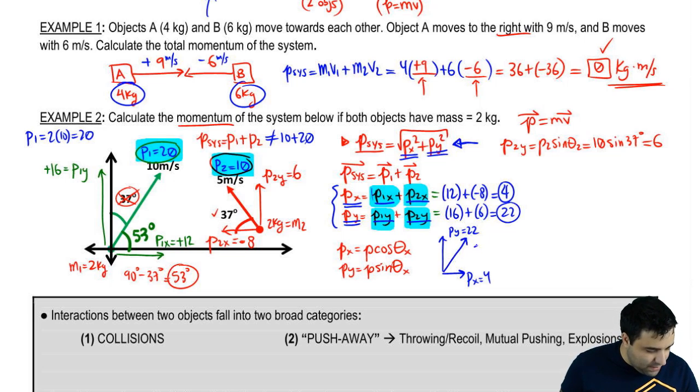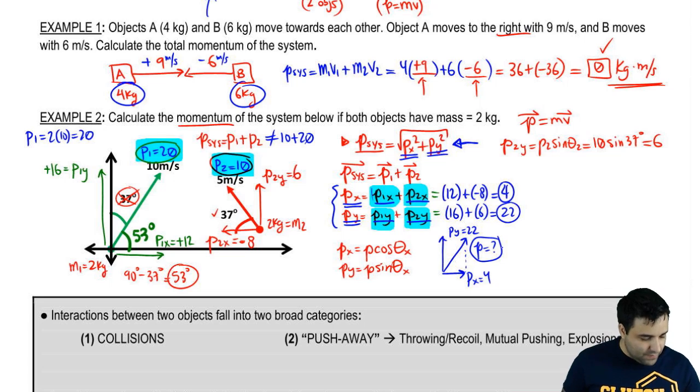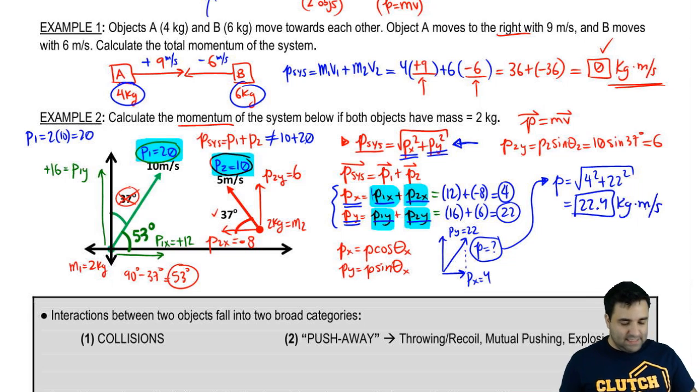And this is your total P right here, which is what we want. It forms a little triangle, which is why we're able to use the Pythagorean theorem. So P is going to be the square root of 4 squared plus 22 squared. And the final answer is 22.4 kilograms meters per second. Cool.